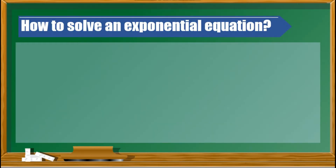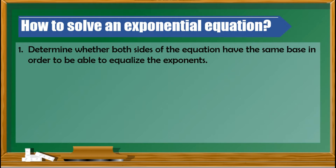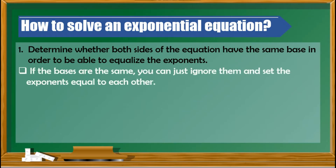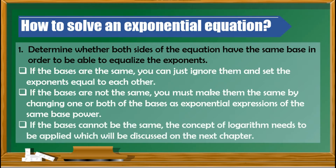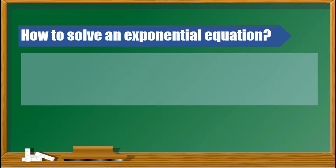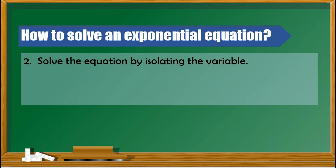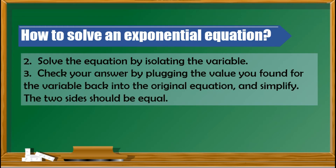So how do we solve an exponential equation? First, we need to determine whether both sides of the equation have the same base in order to equalize the exponents. If the bases are the same, you can simply ignore them and set the exponents equal to each other. But if the bases are not the same, you must make them the same by changing one or both bases as exponential expressions of the same base. And if the bases cannot be made the same, the concept of logarithm needs to be applied, which will be discussed in the next chapter. Next, solve for the equation by isolating the variable. Third, check your answer by plugging the value found back into the original equation and simplify — the two sides should be equal.